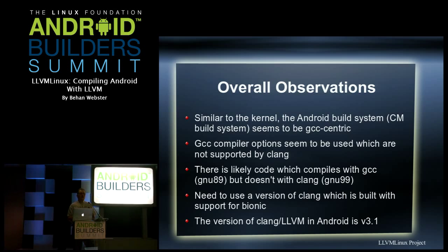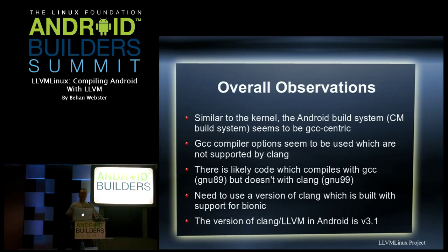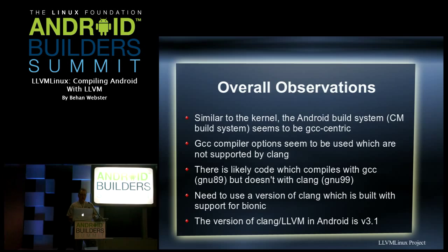There's also the GNU89 versus GNU99 situation again. And since you're building the operating system itself, your C compiler has to be tied into the C library — when building Android you need to make sure it's using Bionic, not glibc. So you can't just 'apt-get install clang' on your machine and start going; you have to use a Clang built specifically for Android, like the one in the NDK. The NDK version is 3.1, but for the kernel at least you need a much newer version.